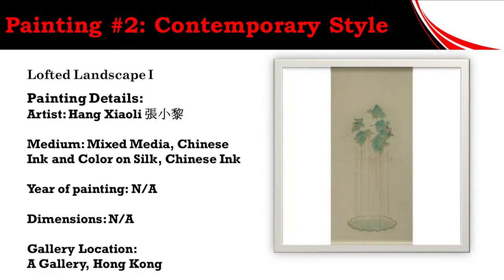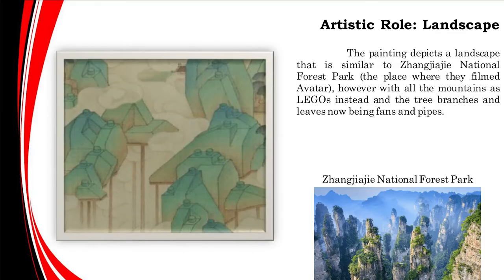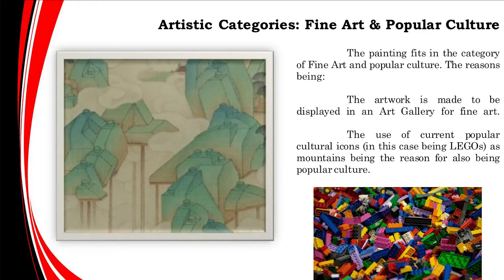The second of two paintings that we have to analyze is the contemporary painting Lofted Landscape by Huang Xiaoli. First of all, we need to identify the features of this painting. Its artistic role is a landscape as it depicts a landscape similar to the Zhangjiajie National Forest Park, the place where they filmed Avatar. However, with all the mountains as Legos instead, and the tree branches and leaves now being fans and pipes. Its artistic category is fine art and pop culture, as it seems it is to be presented in an art app, and the use of current popular cultural icons — in this case, Legos as the mountains — is the reason for it also being pop culture.